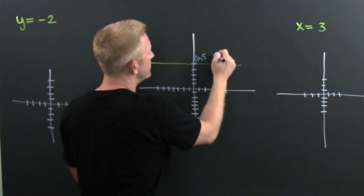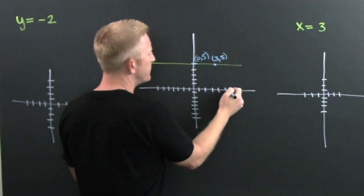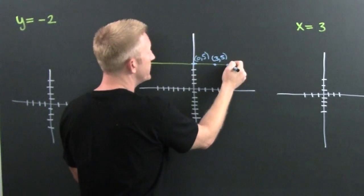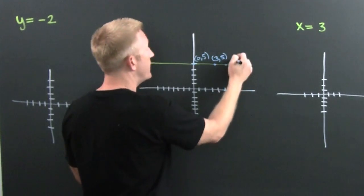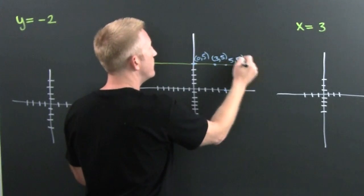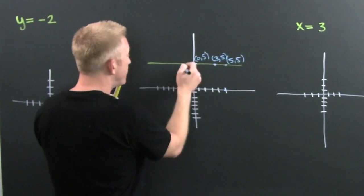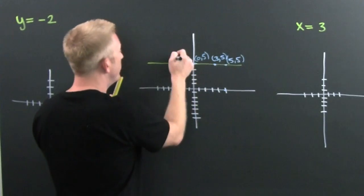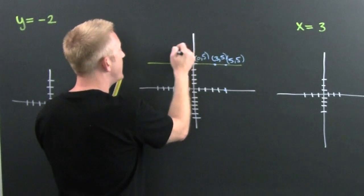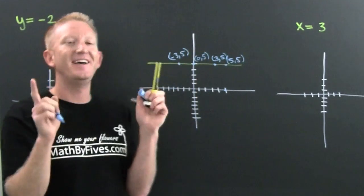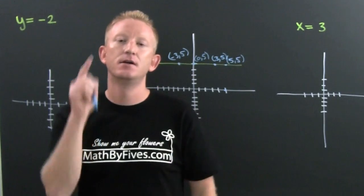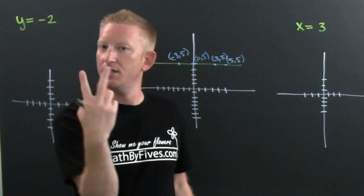What's this point here? That's the point (5,5). But wait, there's more. What's this point right here? That's the point (-3,5).